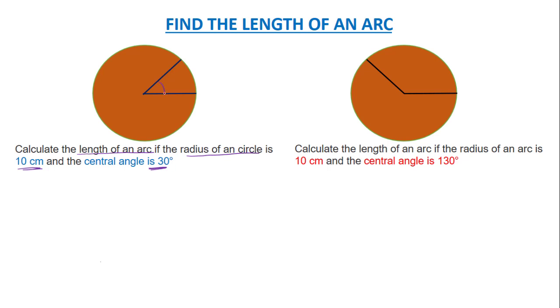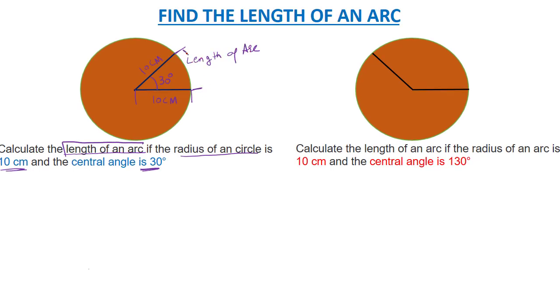So this angle is 30°, and the radius of the circle is 10 cm. This is 10 cm, and this is also 10 cm. You have to find out the length of the arc. This is the length of the arc up to this point. Let's understand how to find it.